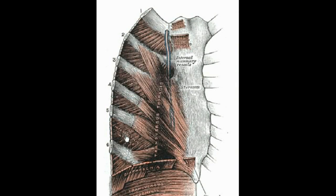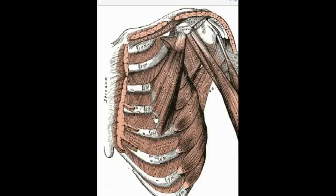Here we're looking at the internal intercostal muscles. They originate on the superior border of the ribs and insert on the inferior border of the ribs — the exact opposite of the external intercostal muscles. These are responsible for the expansion of the thoracic cavity during inhalation.